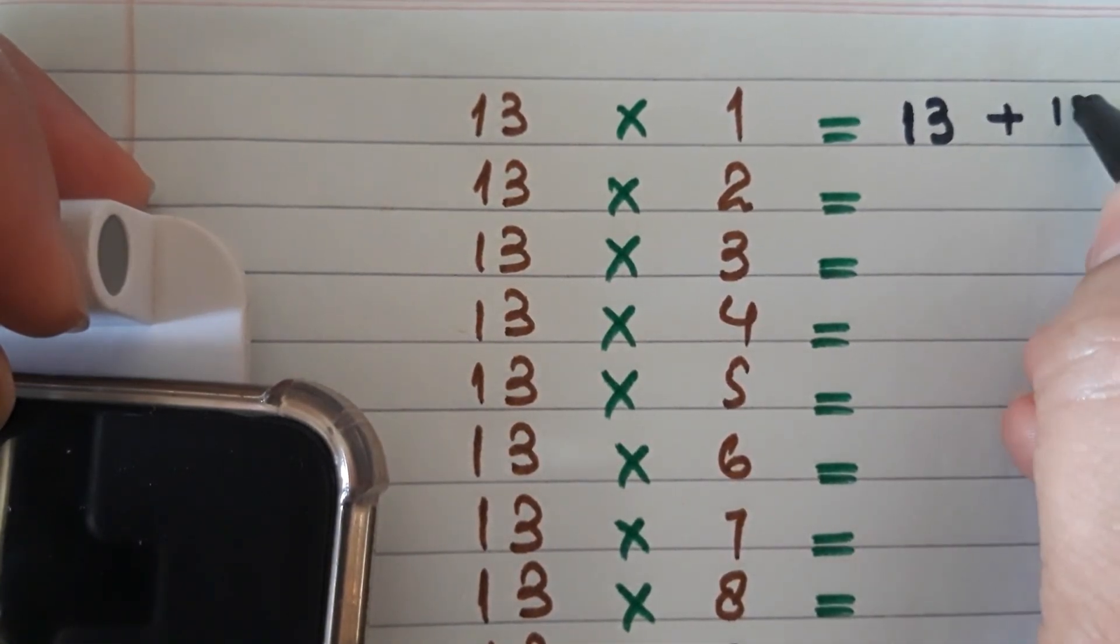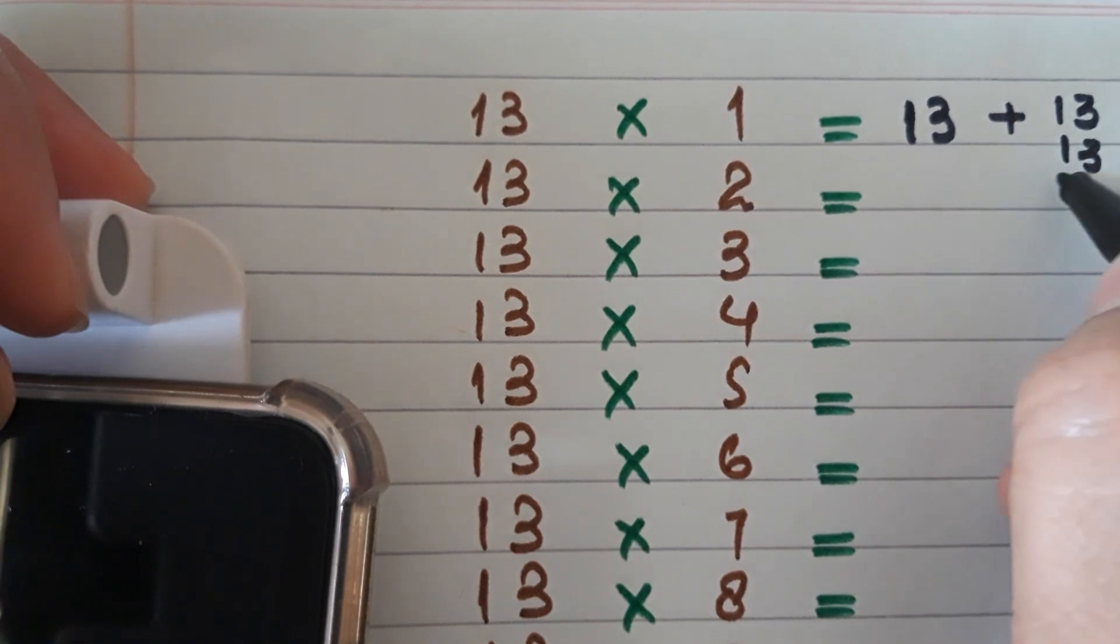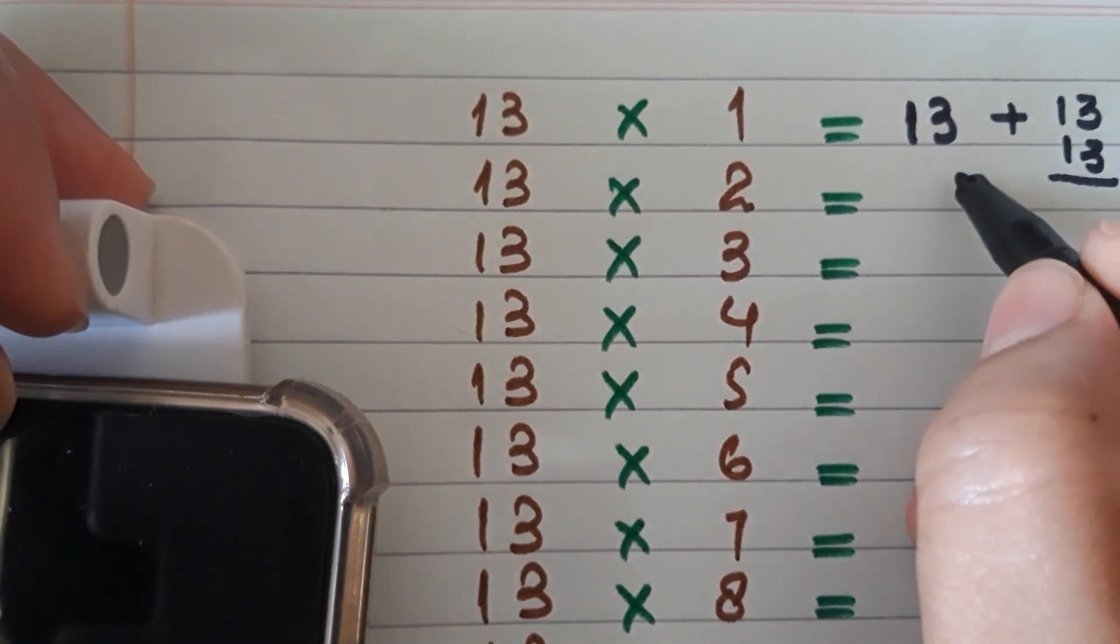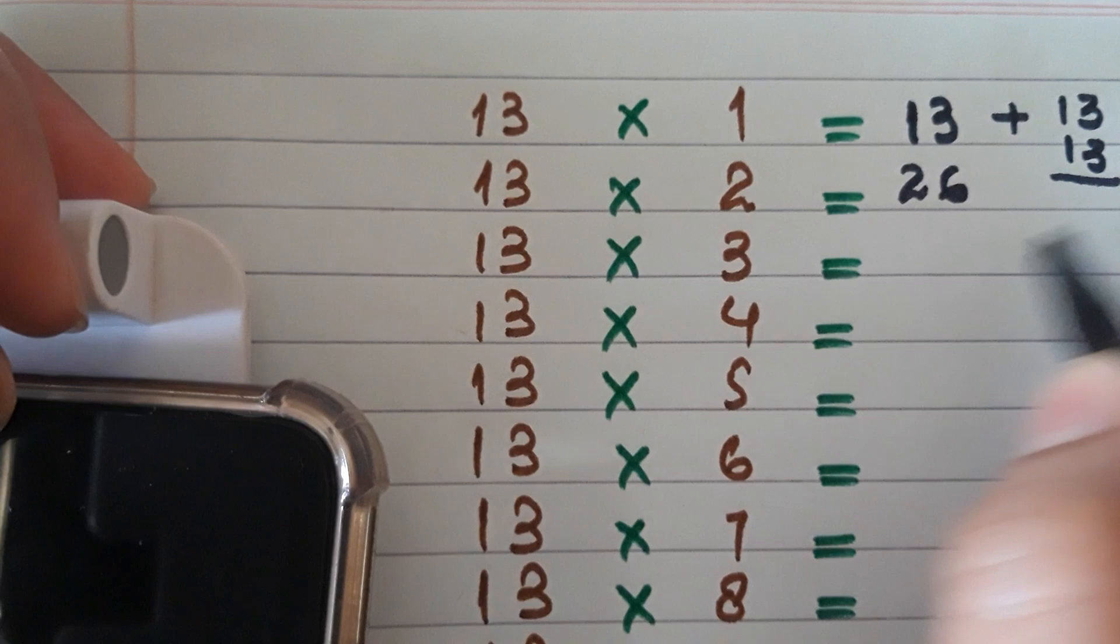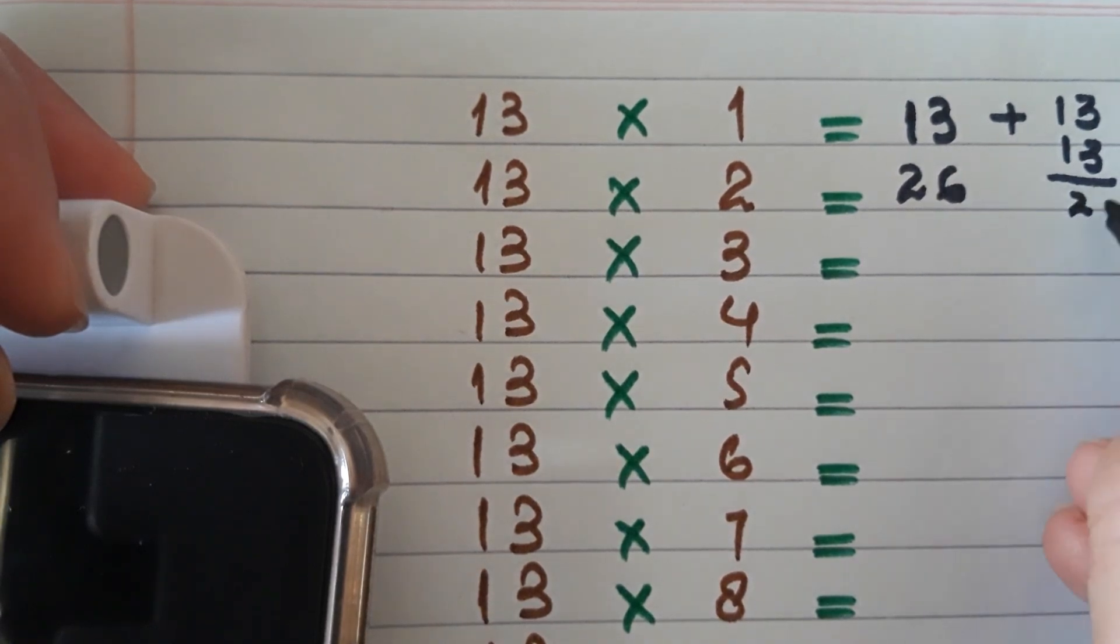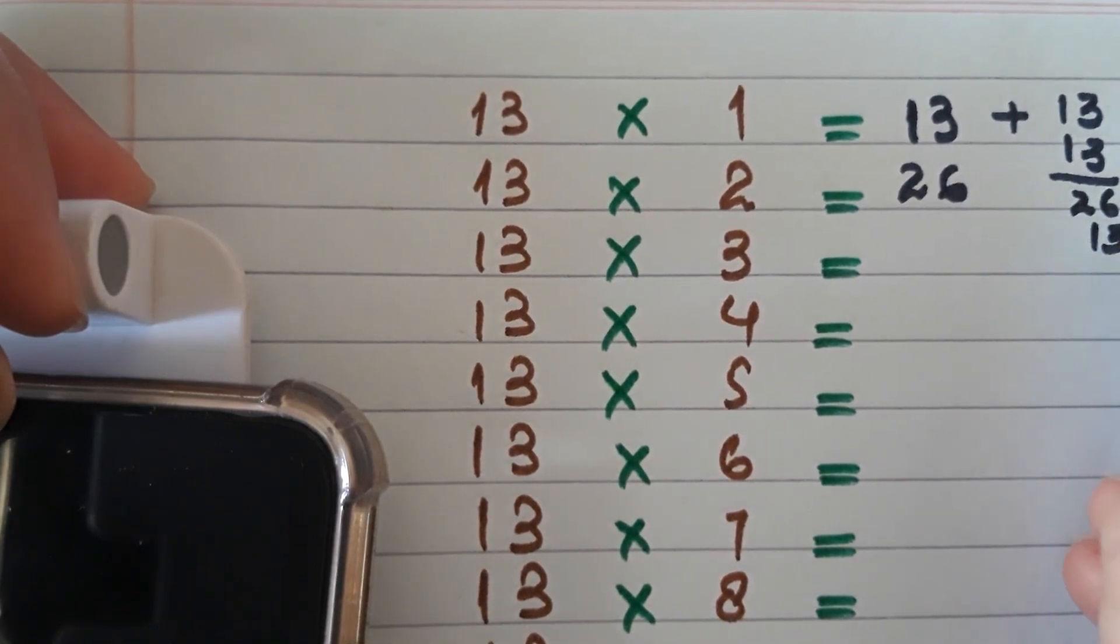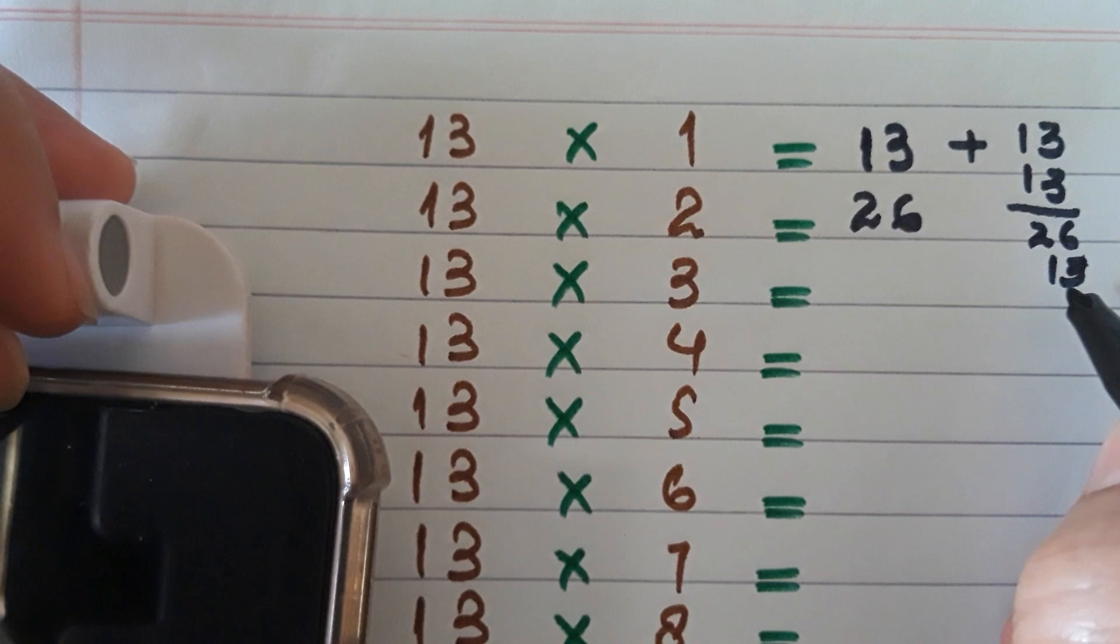Just like you can see in this video, 13 plus 13 equals 26, so 13 multiplied by 2 equals 26. Now we will add 13 with 26, then we will get the answer for the next number.